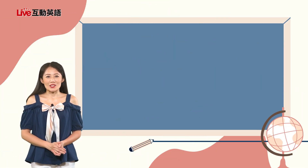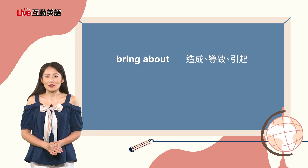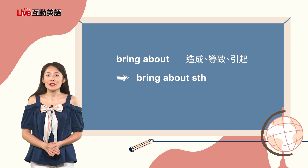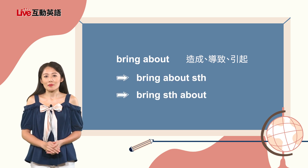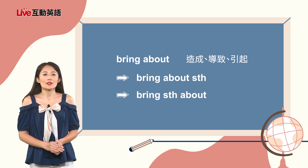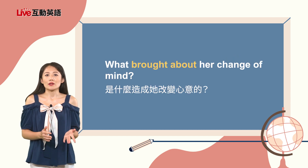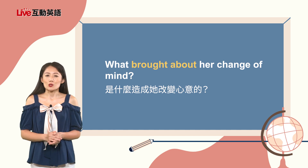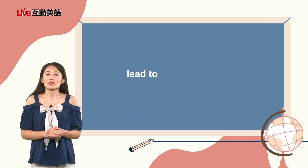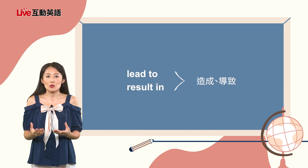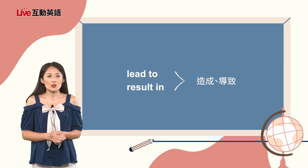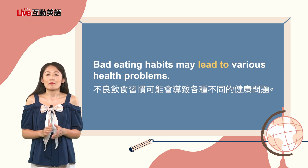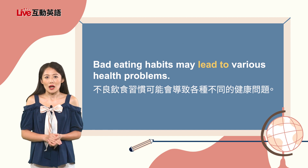好，我们进入文法时间。重点是短语动词bring about，表示造成、导致或引起。我们可以用bring about something，或是bring something about来表达。例如：What brought about her change of mind? 是什么造成她改变心意的呢？补充一下，lead to和result in也可以表达造成、导致。例如：Bad eating habits may lead to various health problems，不良饮食习惯可能会导致各种不同的健康问题。